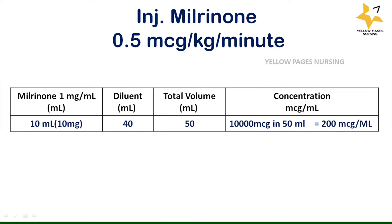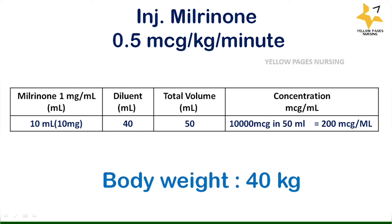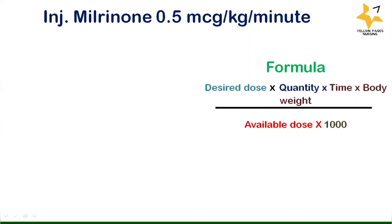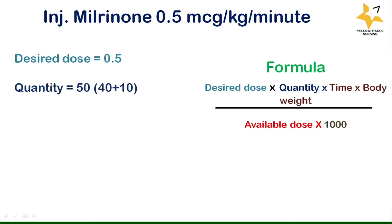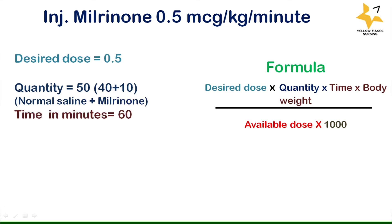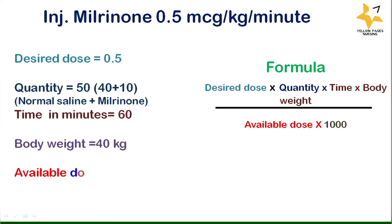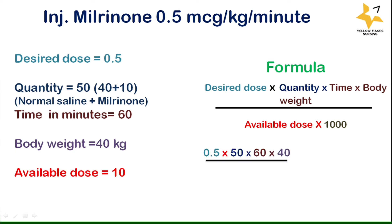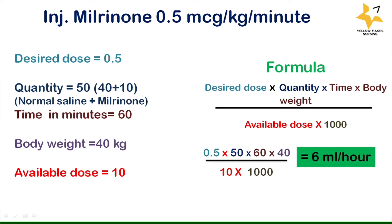Body weight is 40 kg. The desired dose is 0.5. Quantity is 50 — that is 40 ml normal saline plus 10 ml milrinone. Time in minutes is 60. Body weight is 40 kg. Available dose is 10 — that is 10 mg in 10 ml. Applying all values into the formula, we get the answer: 6 ml per hour.